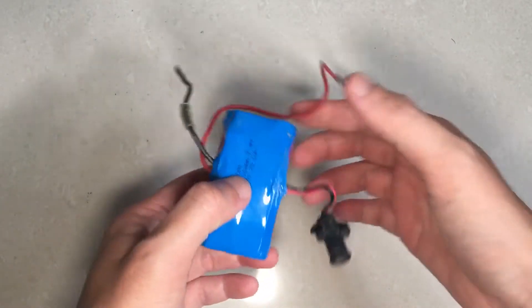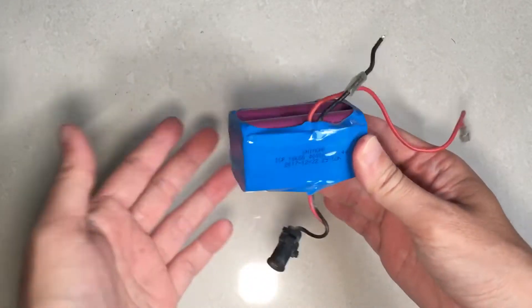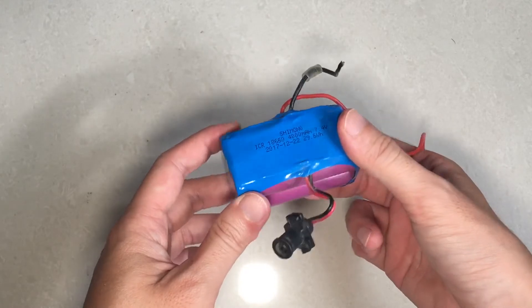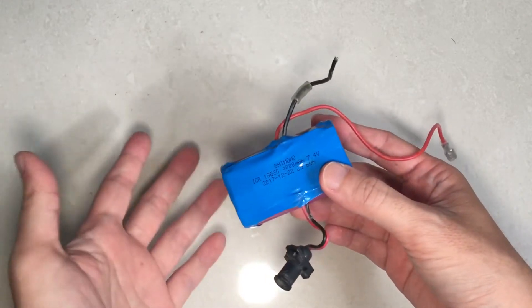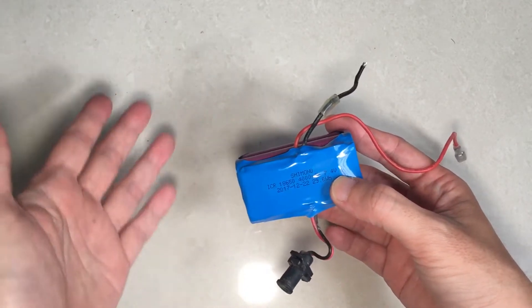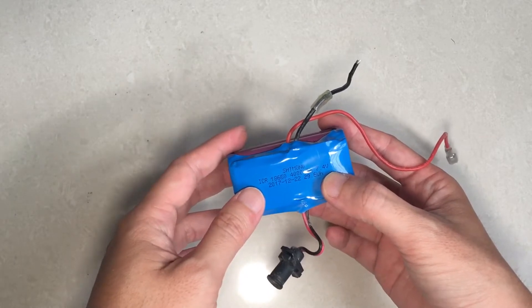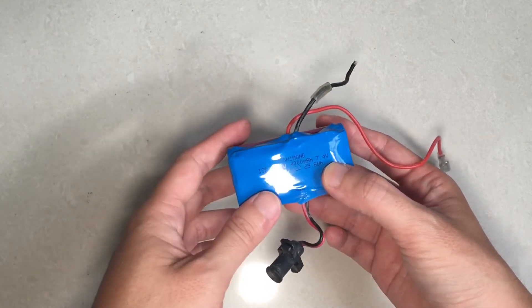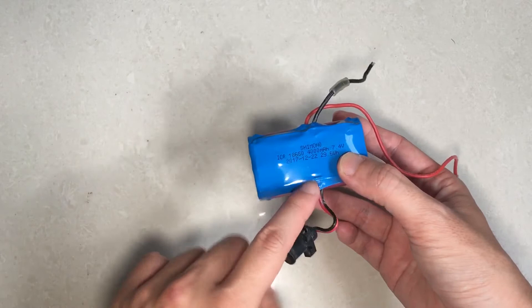Hi everyone, today I have with me a battery that I've extracted from a vacuum cleaner. Apparently it doesn't work anymore. I've tested the rest of the vacuum cleaner and found that everything else works except for the battery.